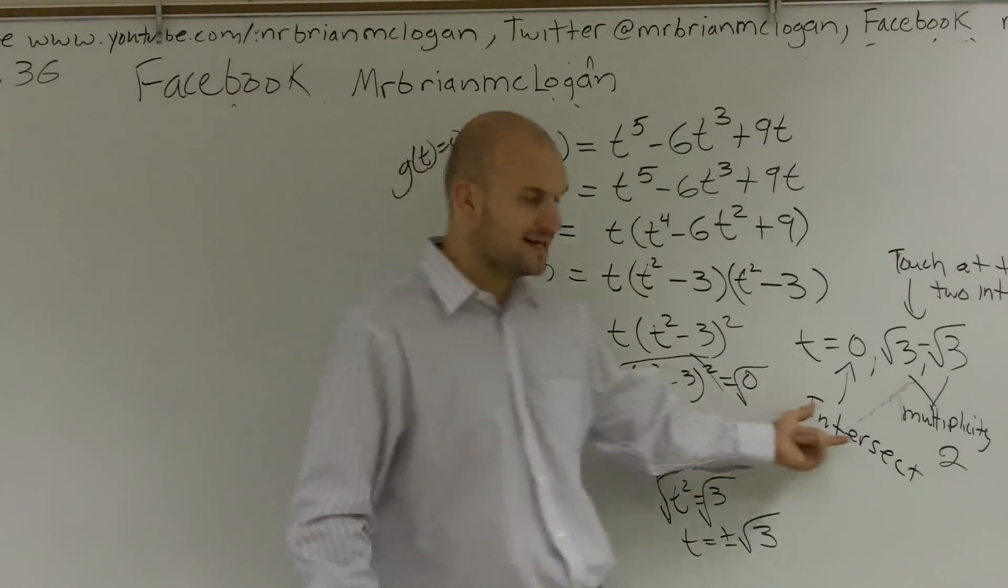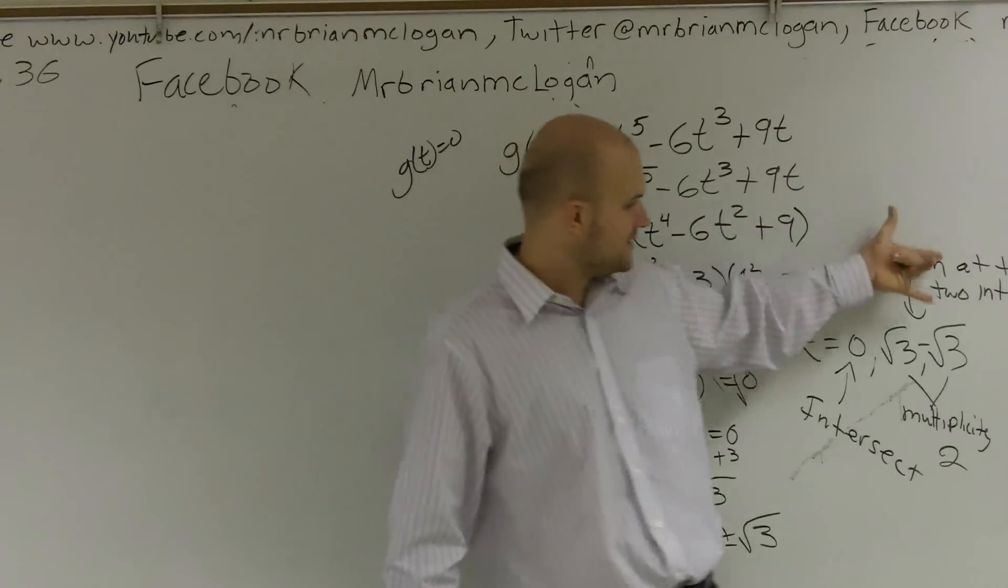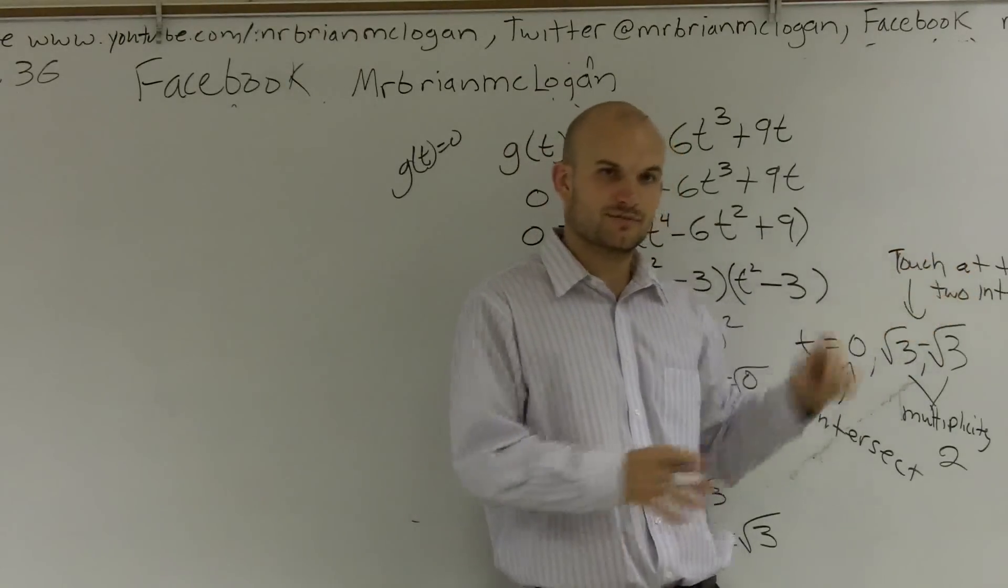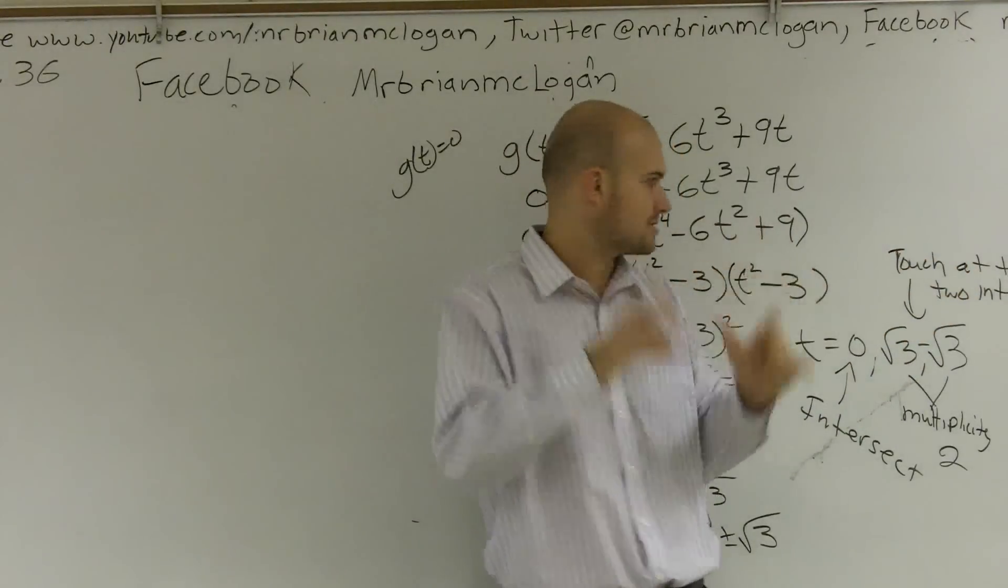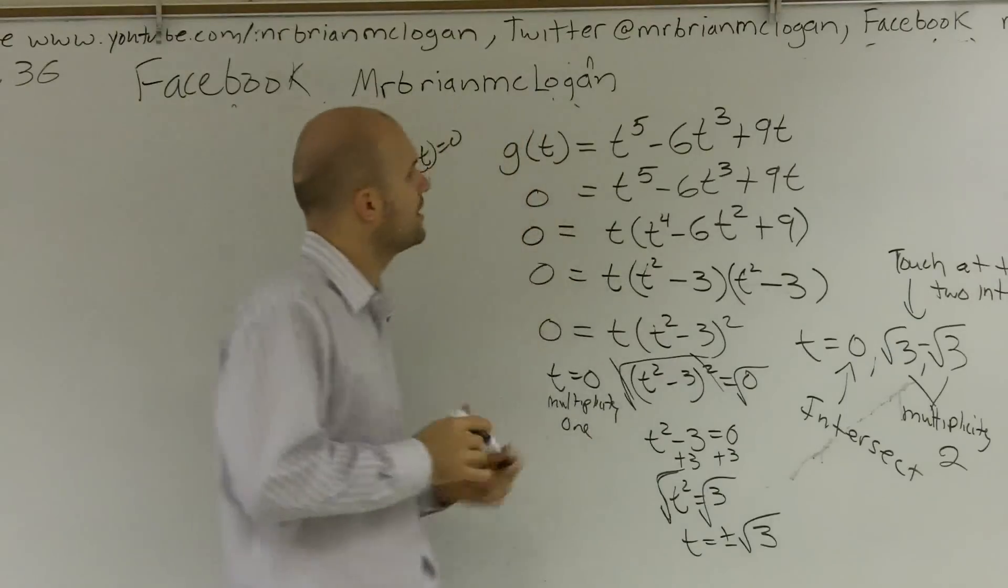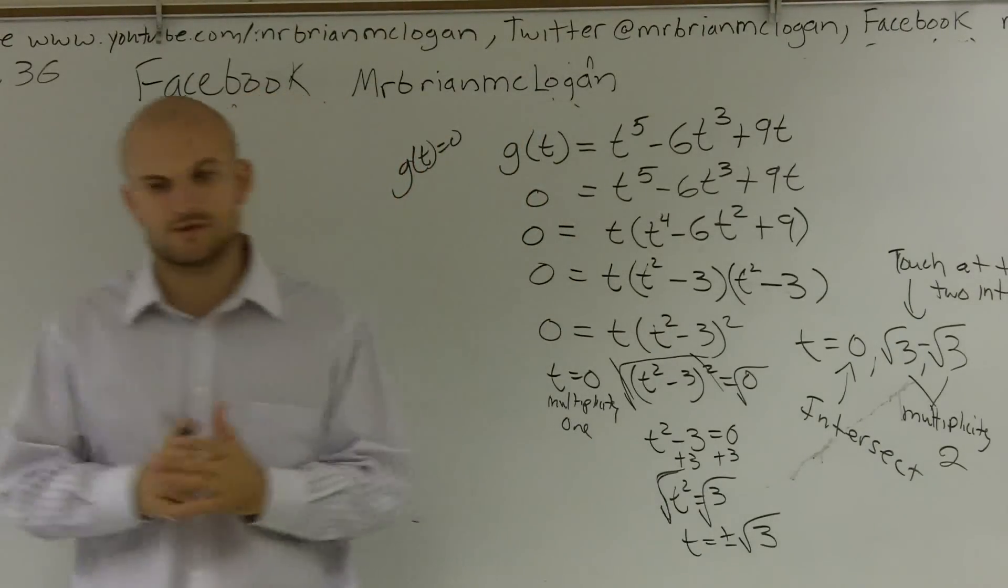since it has a multiplicity of one, it's going to intersect. Alright? So just remember, when you have a multiplicity of one, it's intersecting. A multiplicity of two, it's just going to touch. Okay? So it just runs out and touches it. And that's how you determine what the zeros are and the multiplicity for your zeros.